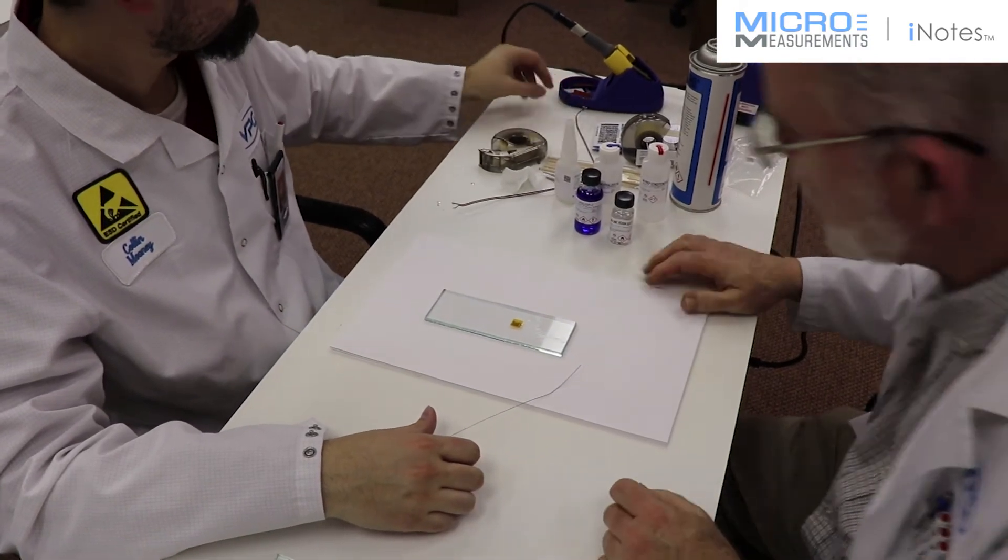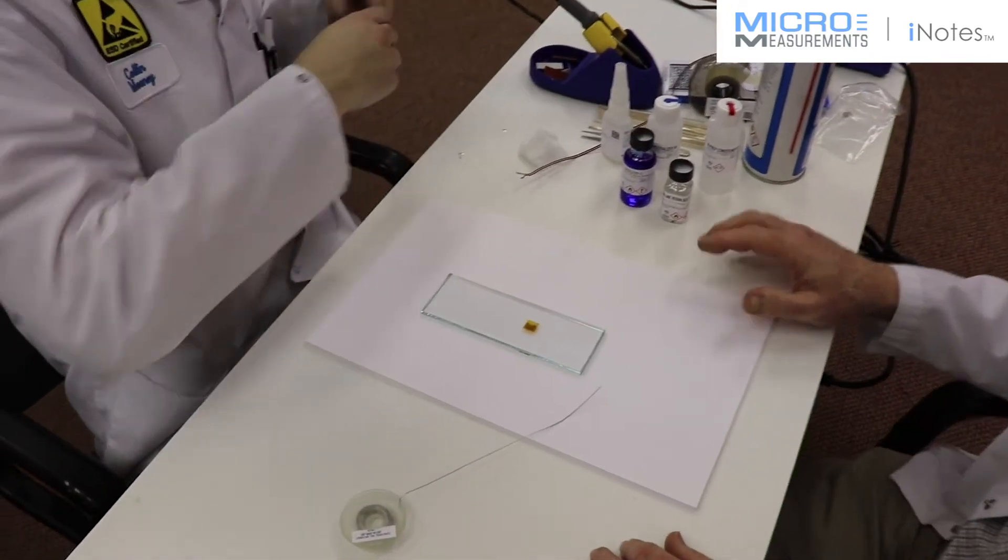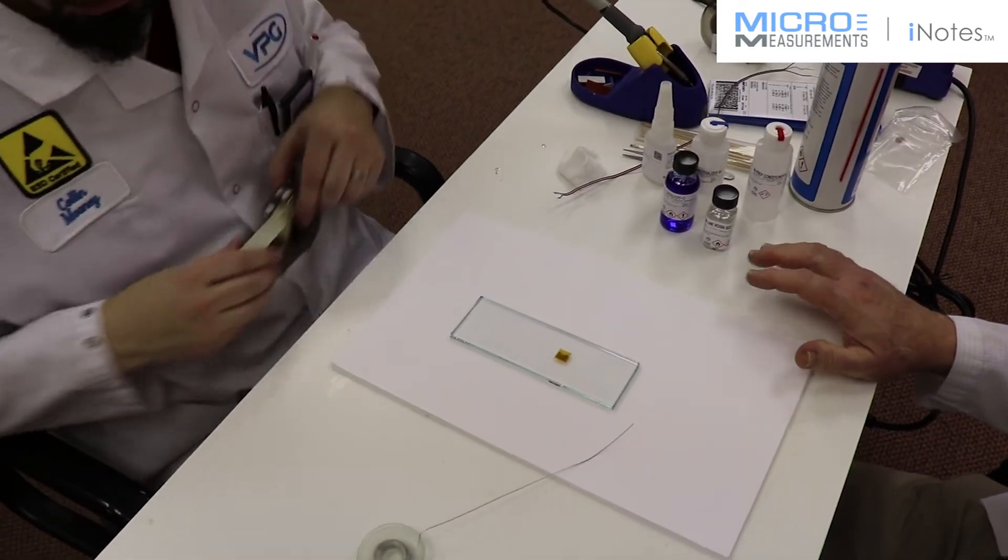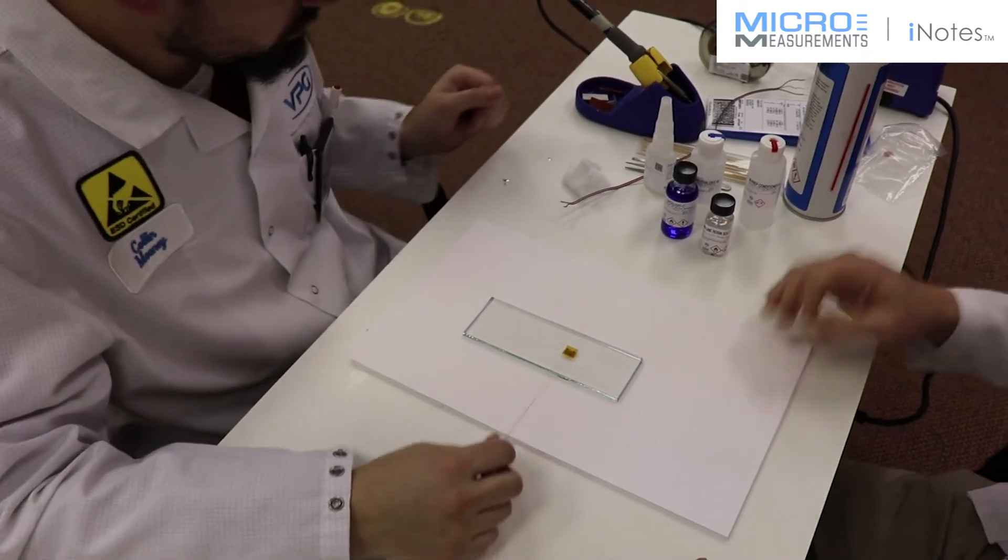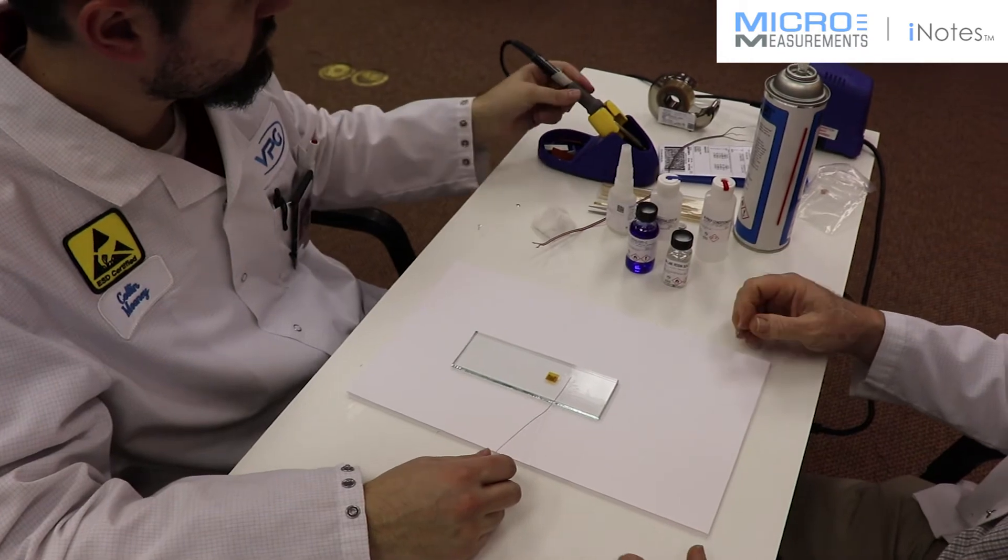Having removed the gauge handling tape and inspected the gauge, we're now going to tend the solder junctions or the tabs of the gauge. Again, because glass is such a very poor heat sink, we have to be in and out fairly quickly. If this were a piece of aluminum, we could go a longer dwell time.